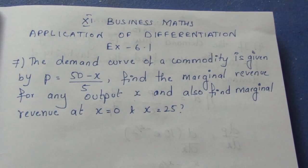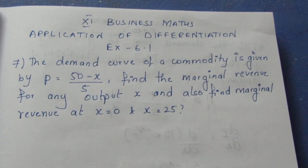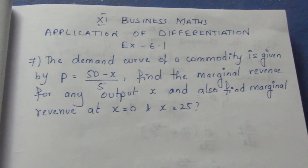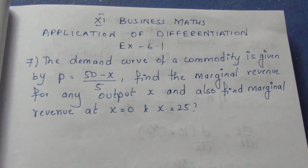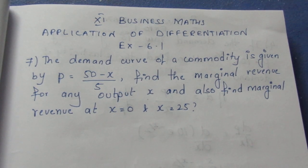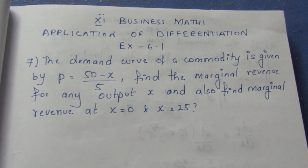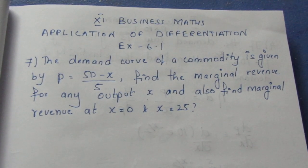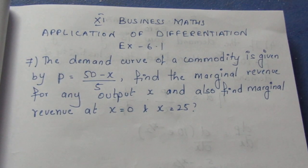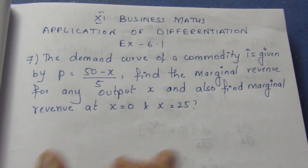Hello viewers, I am Ithli. In the 11th business maths application of differentiation, exercise 6.107, we will look at the question. The demand curve for a commodity is given by P is equal to 50 minus x by 5. Find the marginal revenue for any output x, and also find marginal revenue at x is equal to 0 and x is equal to 25.